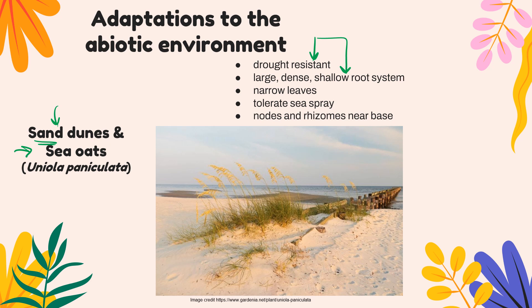Another benefit of this large, dense, shallow root system is that it holds the sand in place, reducing erosion, which also means the plant itself won't blow away. You can see ridges where the grass is rooted — these ridges form from the roots holding the sand in place — and that sand is not going to be blown away the way it might be where there isn't any grass.